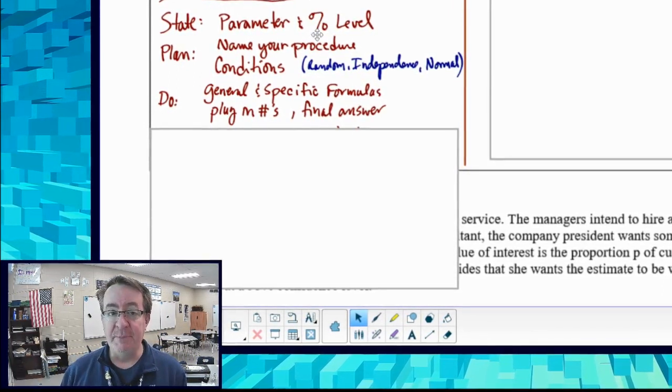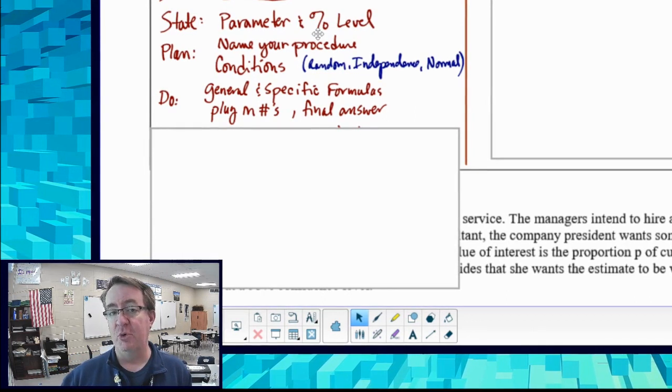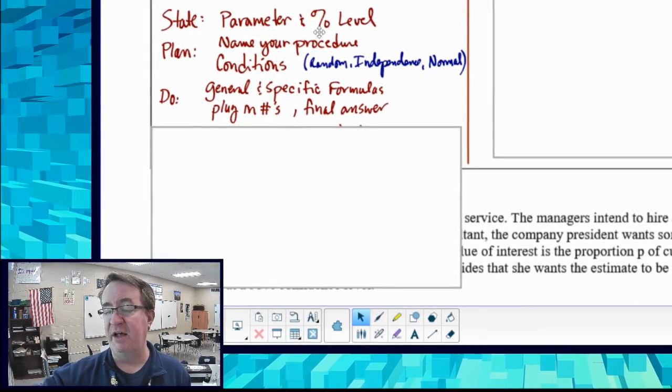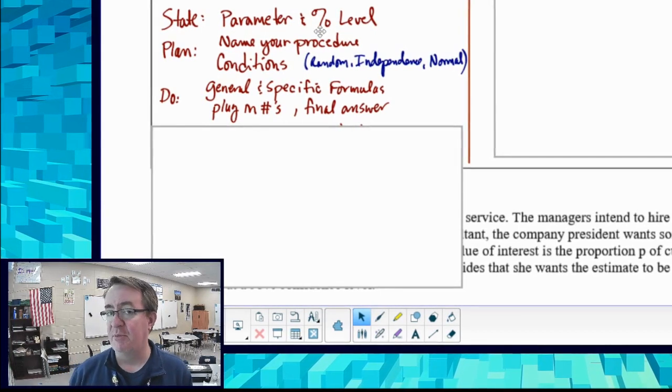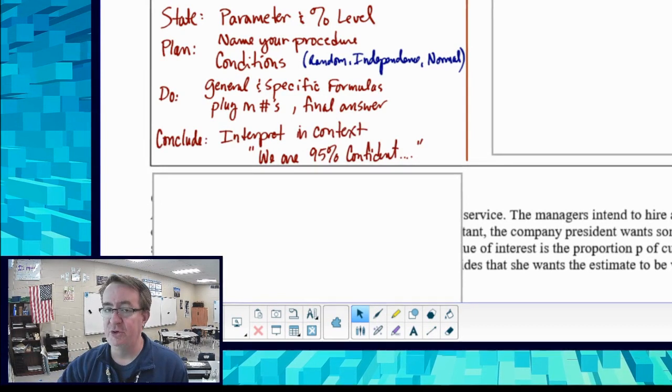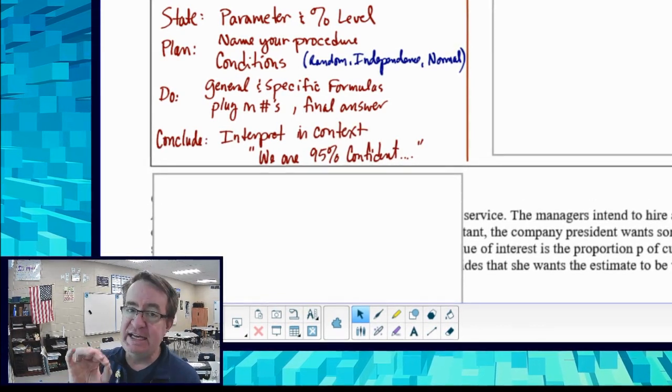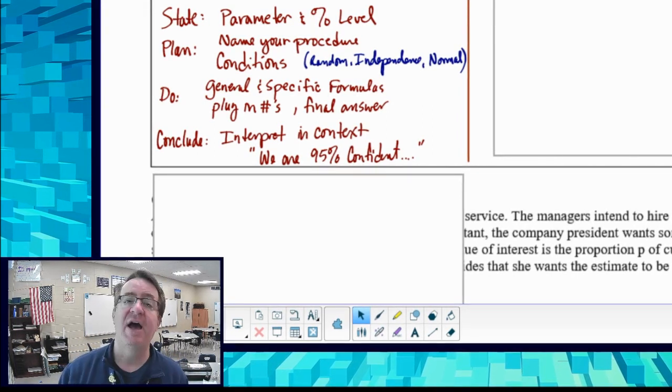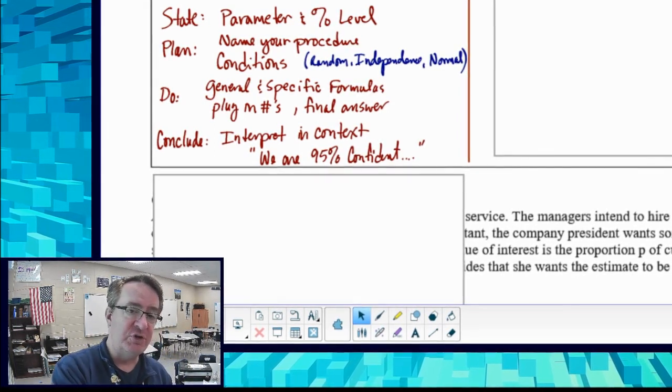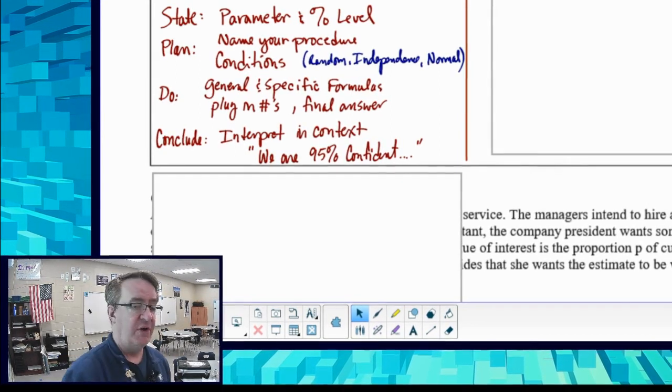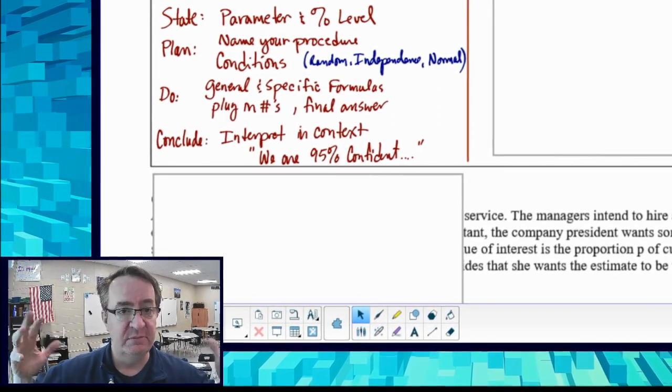You need to plug in all the numbers that you have so you can show how those go in - what is your p hat, what is your n value, etc. Then you need to come up with your final answer. And then just like a good essay, we're going to conclude. You're going to interpret in context what you are doing. So we are 95% confident that the true proportion of pigs that are over 100 pounds falls between this and this.